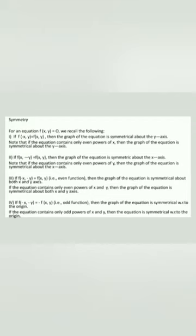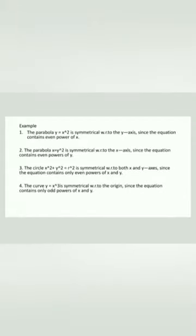Fourth case: if f(−x, −y) = −f(x, y), this is an odd function, and the graph is symmetrical with respect to the origin. So, if the equation contains only odd powers of x and y, then the equation is symmetrical with respect to the origin. Next, we shall see some examples.